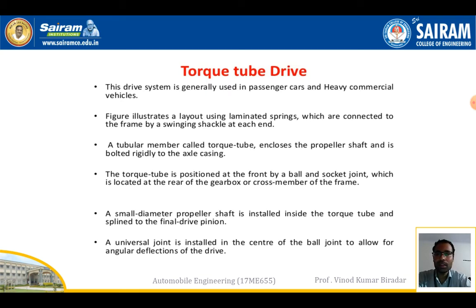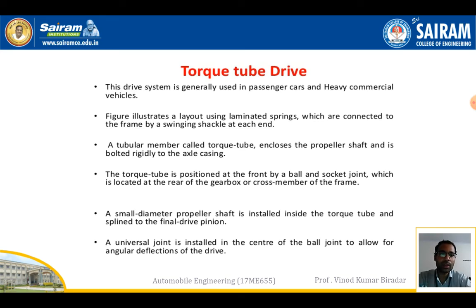The Hotchkiss drive system is generally used in passenger cars and heavy commercial vehicles; the torque tube drive is also used in both. In the figure, all parts are shown — it uses laminated springs connected to the frame by a swinging shackle at each end, and a tubular member called the torque tube, which encloses the propeller shaft and is bolted rigidly to the axle casing.